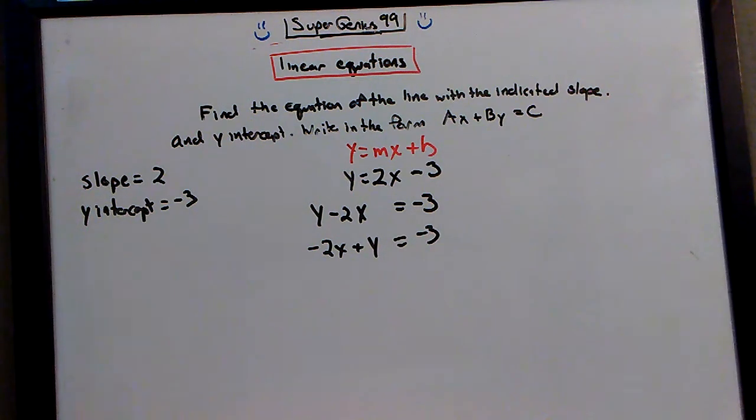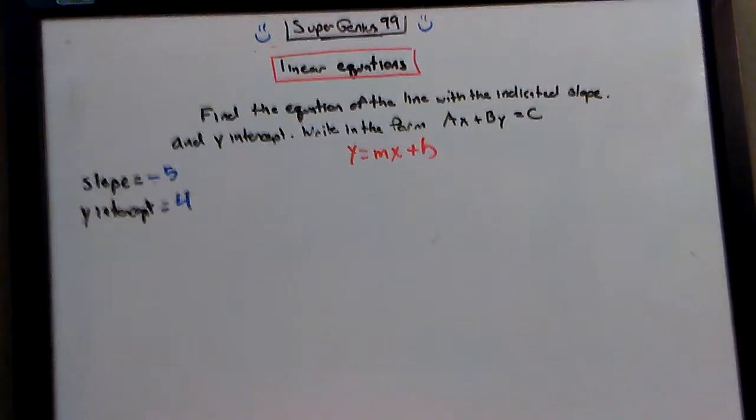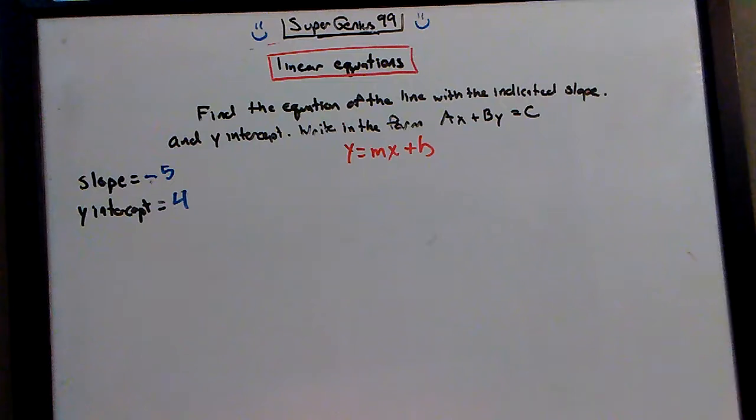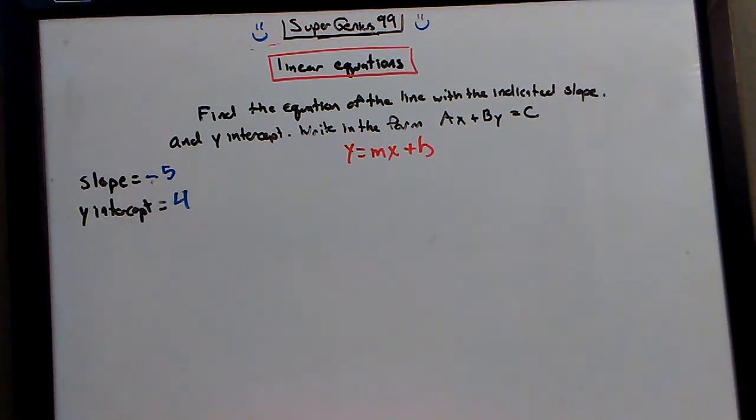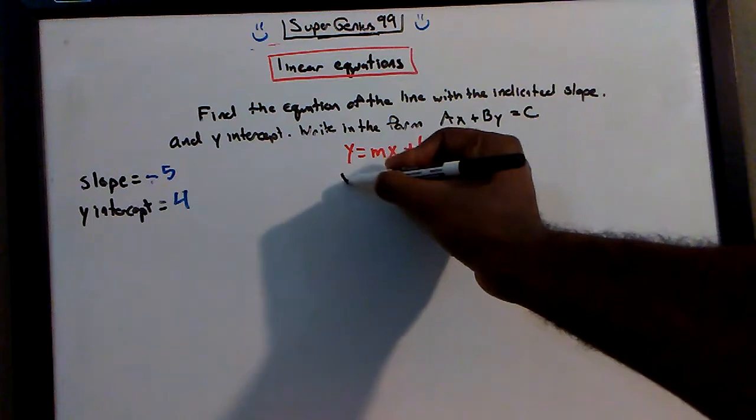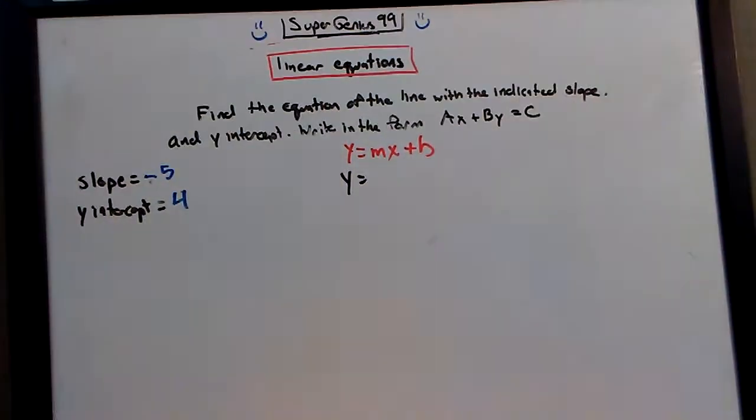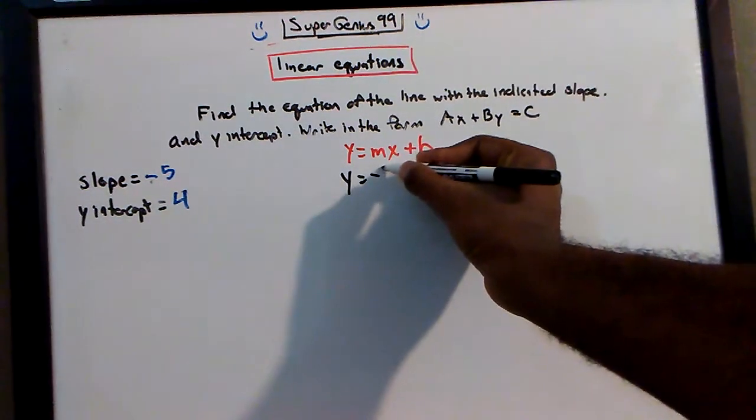Let's look at another problem. Here we have slope as negative 5, y-intercept is 4. So when we have slope and intercept, we can put it in the slope-intercept form. So y is equal to, what is our slope? Negative 5, yes.